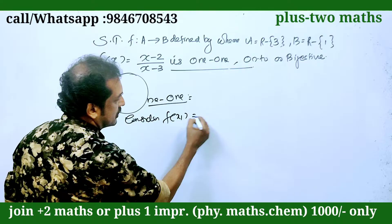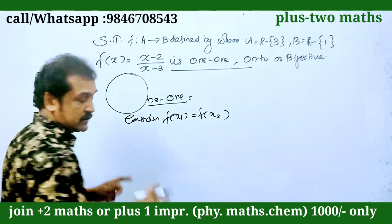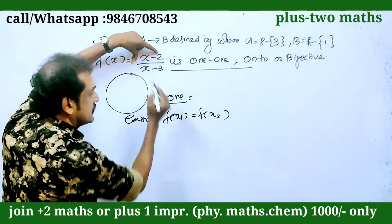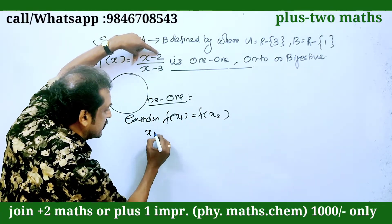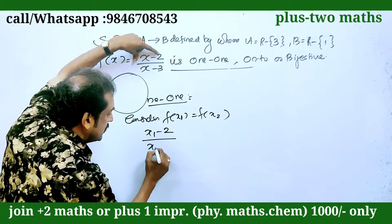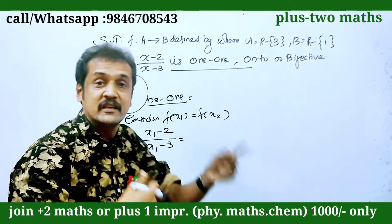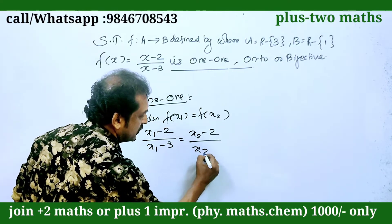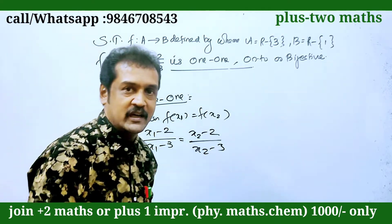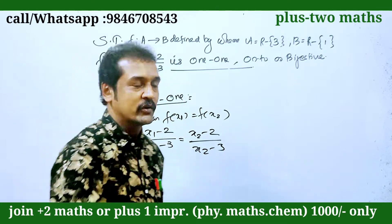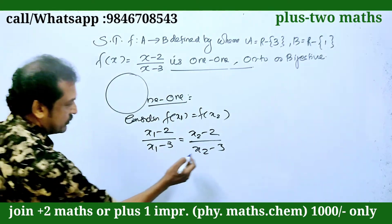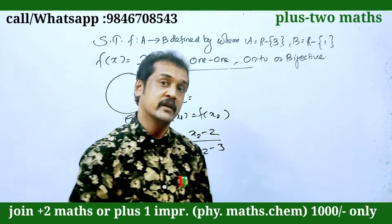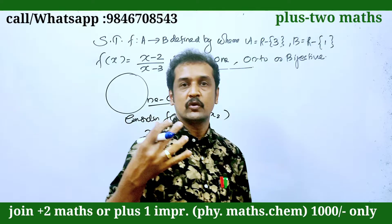Consider: F of x1 is equal to F of x2. F of x1 is x1 minus 2 over x1 minus 3. Right hand side: x2 minus 2 over x2 minus 3. You can cross-multiply. You can cross-multiply.